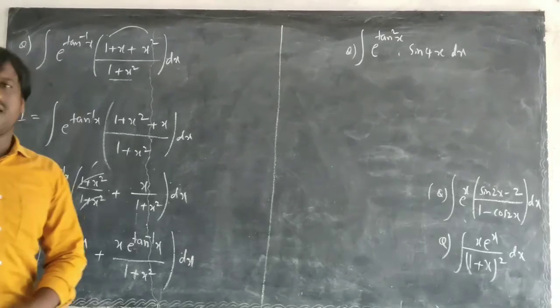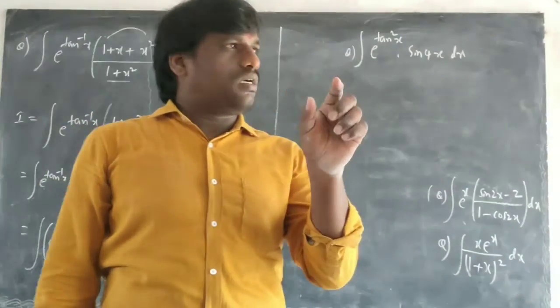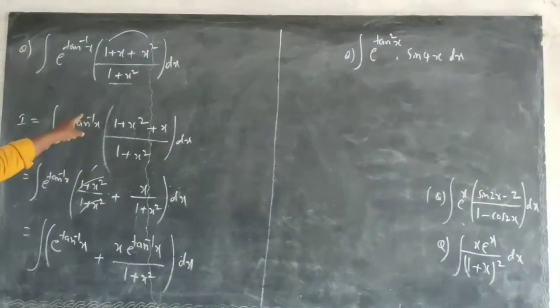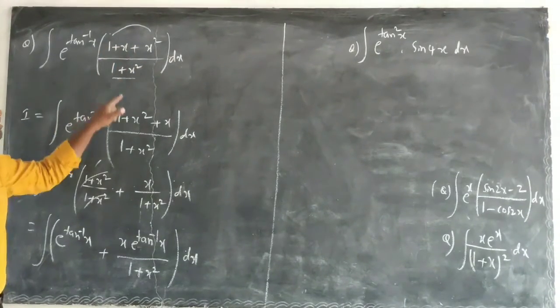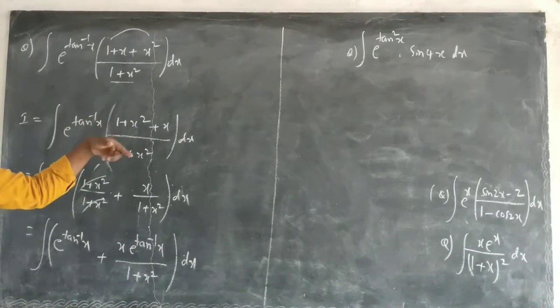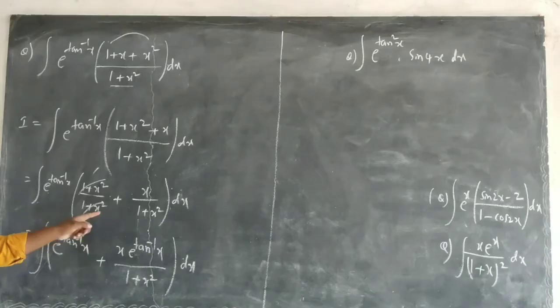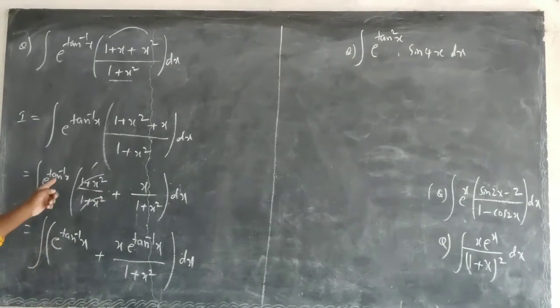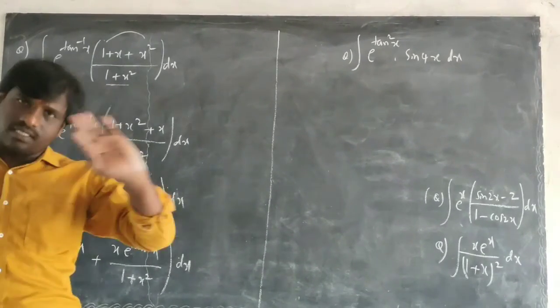What I have done here: I have gathered these two terms, made the denominator the same term, and I separated this one. It is cancelled now. So now I multiply e^(tan^(-1)x) inside.